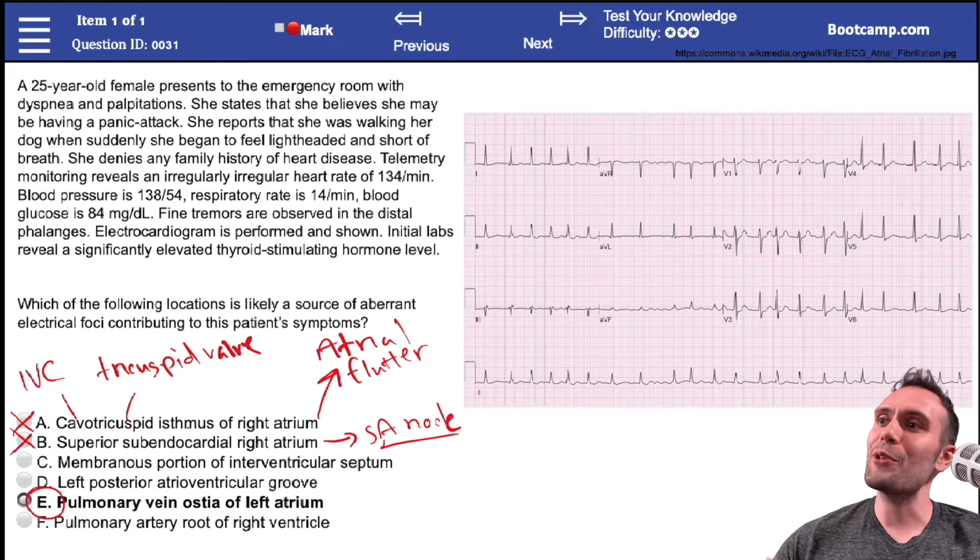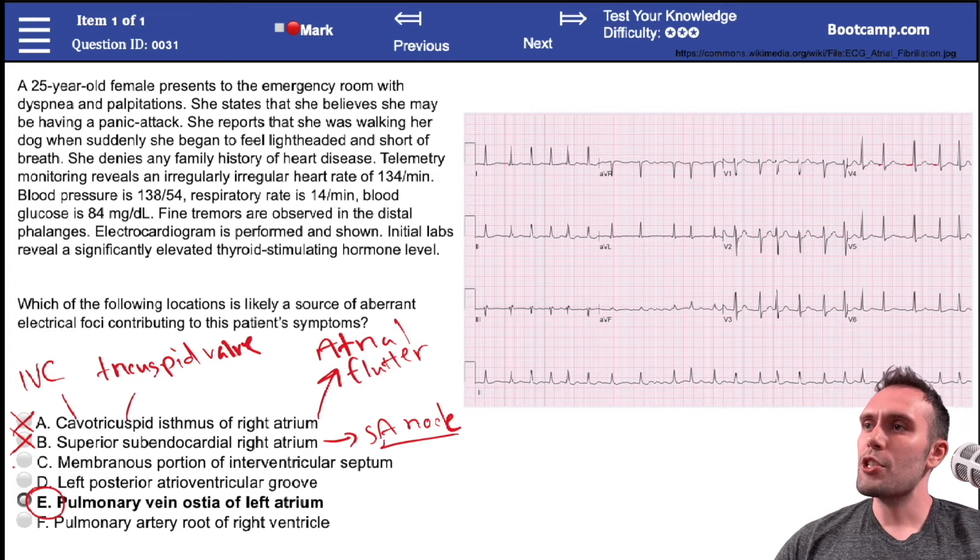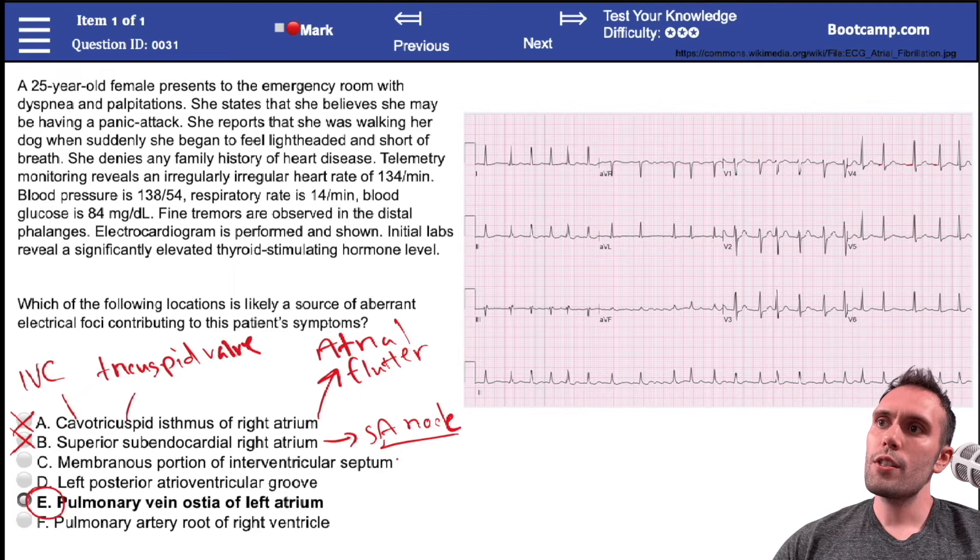Remember, for atrial fibrillation we want to target the pulmonary vein ostia. Let's go through the other options though. Membranous portion of the interventricular septum - what's located in this area? This is going to be the bundle of His, also the location that will have defects for VSDs.